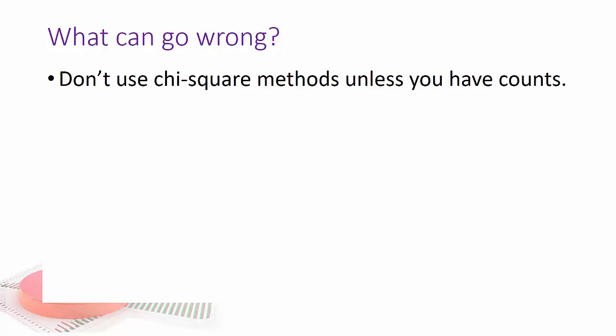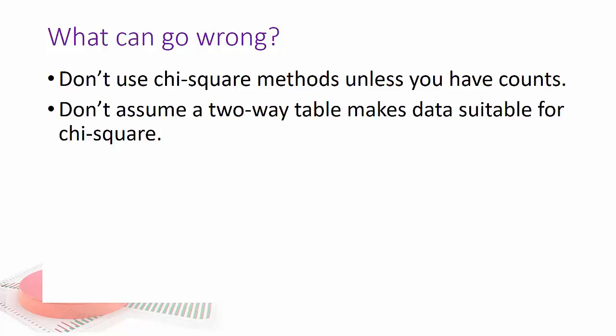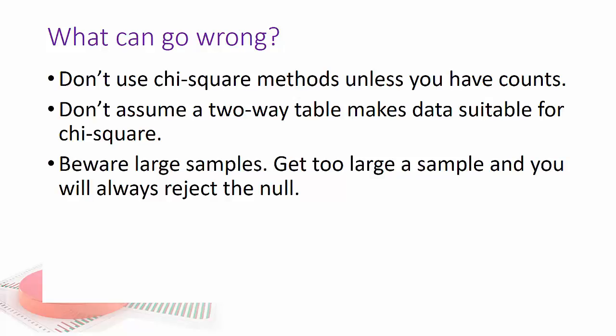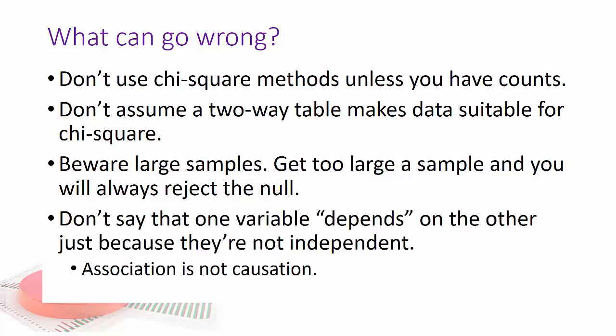All right, so what can go wrong? Don't use chi squared methods unless you have counts. So if I'm comparing weights, that's okay. If I categorize the weights, for example, underweight, correct weight, overweight, obese, that sort of thing. Don't assume a two-way table makes data suitable for chi squared. Just because you have two columns doesn't mean you can run chi squared. Beware of large samples, because what happens is after a while, it gets very hard. If you get too large a sample, believe it or not, you're always going to reject the null. And we don't want to put ourselves in that situation. And don't say that one variable depends on the other just because they're not independent. Association is not causation.